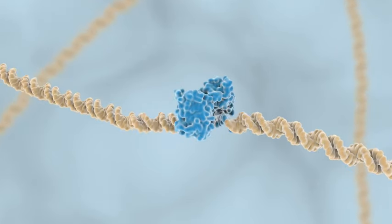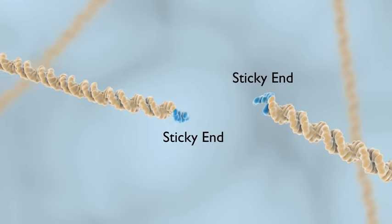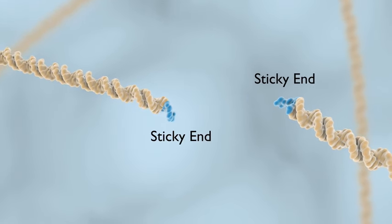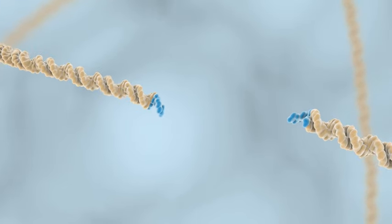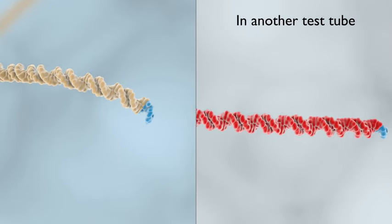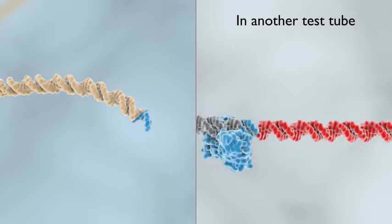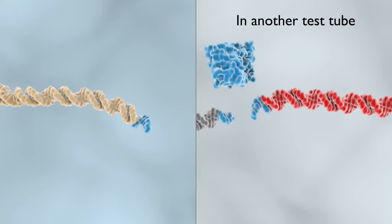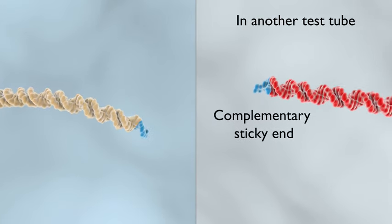Some restriction enzymes leave the DNA with uneven ends, also known as sticky ends, shown here. If the gene we wish to insert and the plasmid are both cut with the same enzyme, these sticky ends will be complementary, meaning they will readily bond with one another.